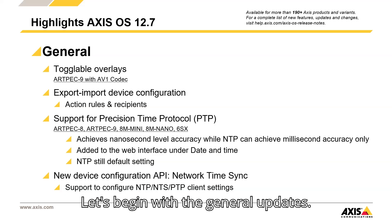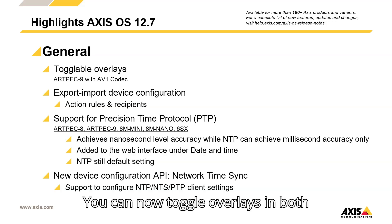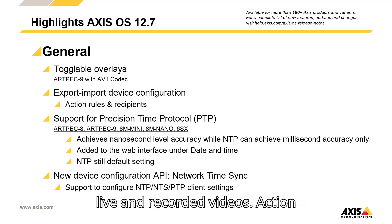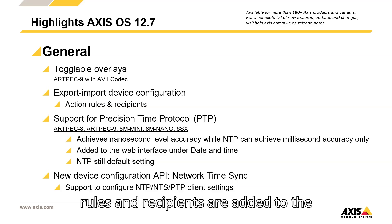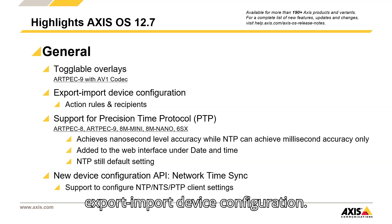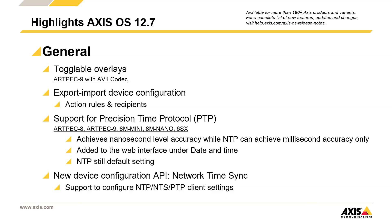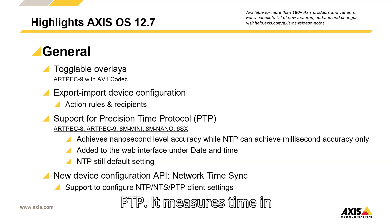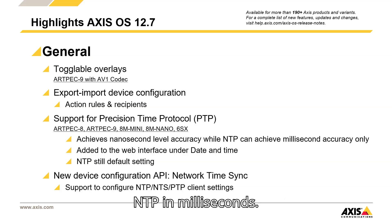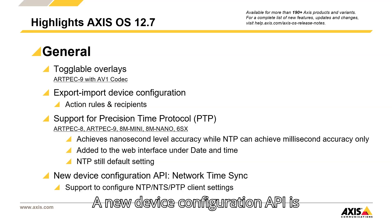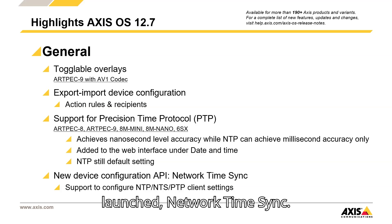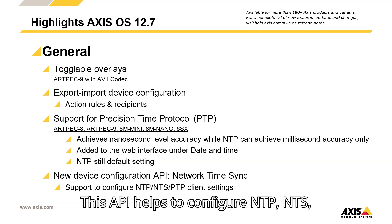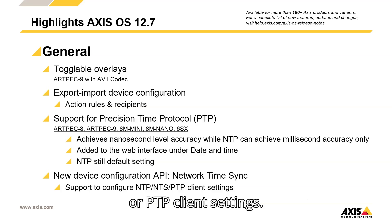Let's begin with the general updates. You can now toggle overlays in both live and recorded videos. Action rules and recipients are added to the export and import device configuration. From AxisOS 12.7 we support the precision time protocol, PTP. It measures time in nanoseconds accuracy while NTP is in milliseconds. A new device configuration API, Network Time Sync, is launched to help configure NTP, NTS, or PTP client settings.